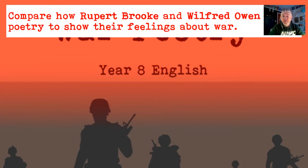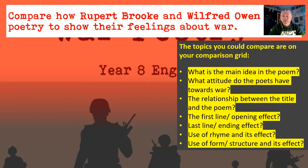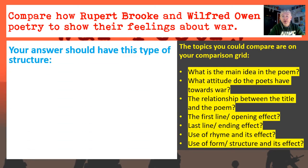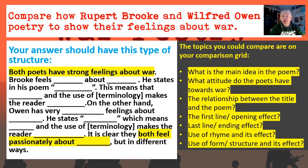There's the question again. These are the things you might want to include in your answer — these are exactly the same things on that comparison grid we looked at in a previous lesson: what is the main idea in the poem, what attitudes the poets have towards war, the relationship between the title and the poem, the first line or opening effect, the last line and ending effect, use of rhyme and its effect, use of form and structure and its effect.